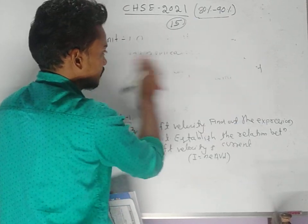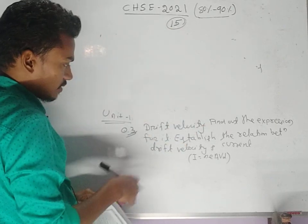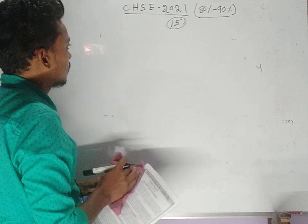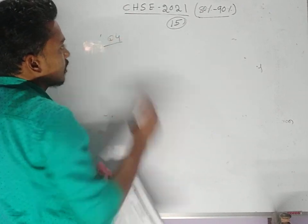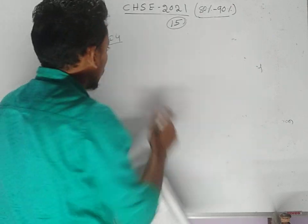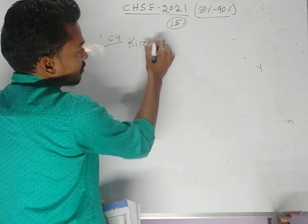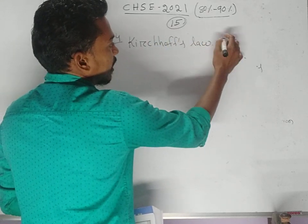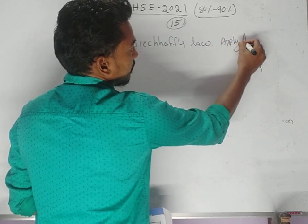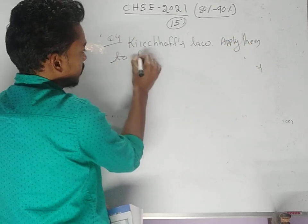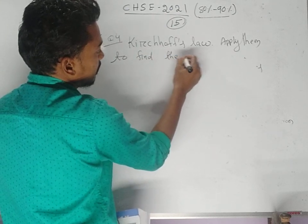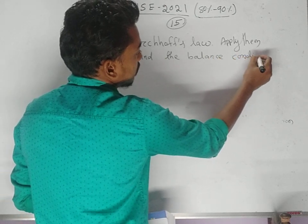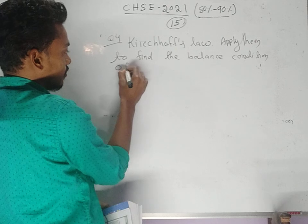Question number four is from current electricity: state Kirchhoff's laws and apply them to find the balance condition of the Wheatstone bridge.